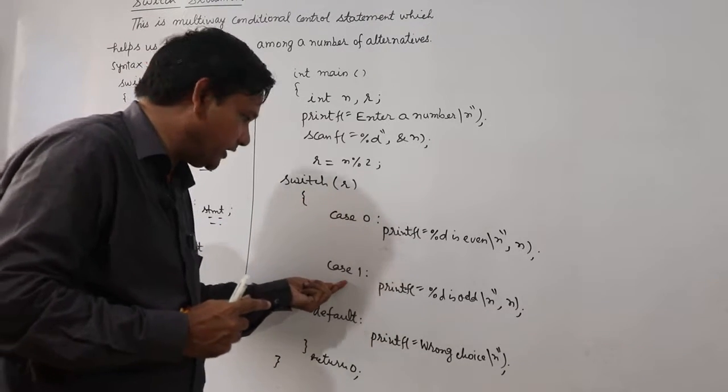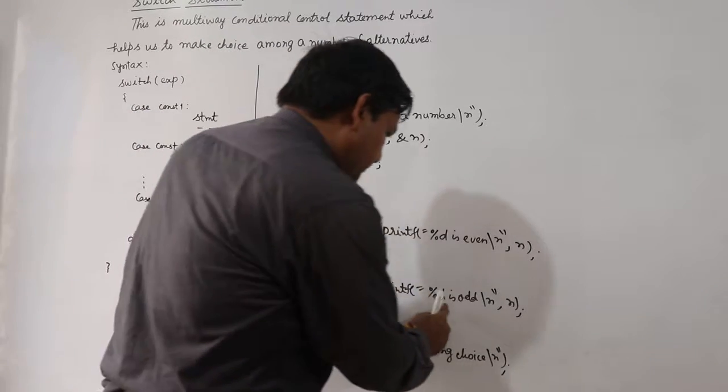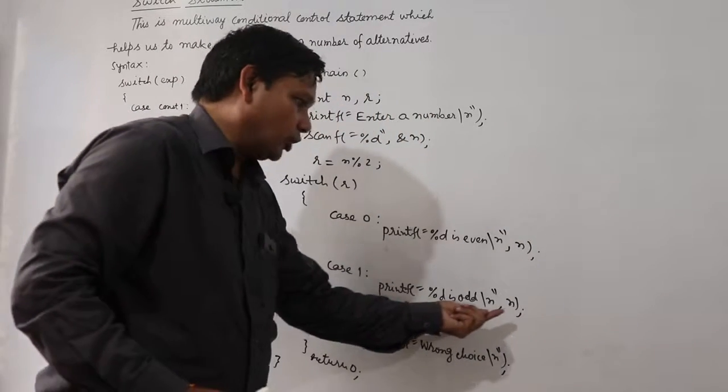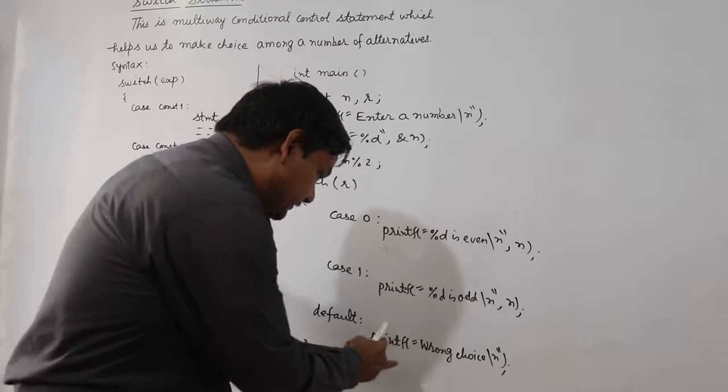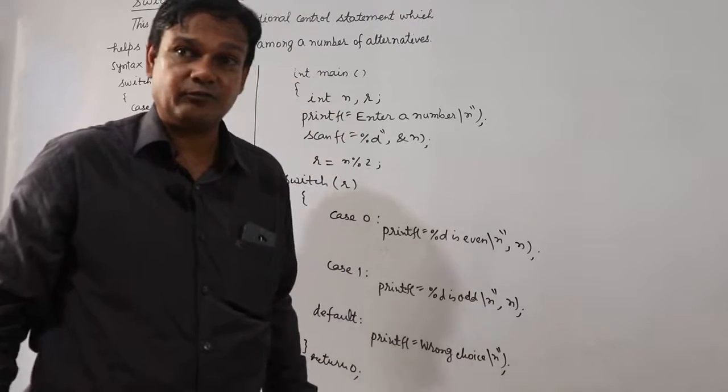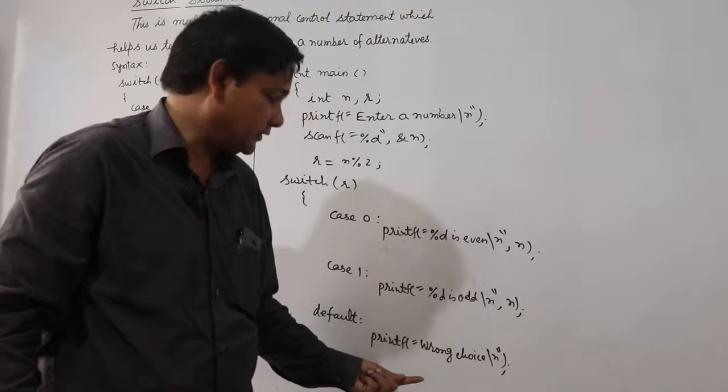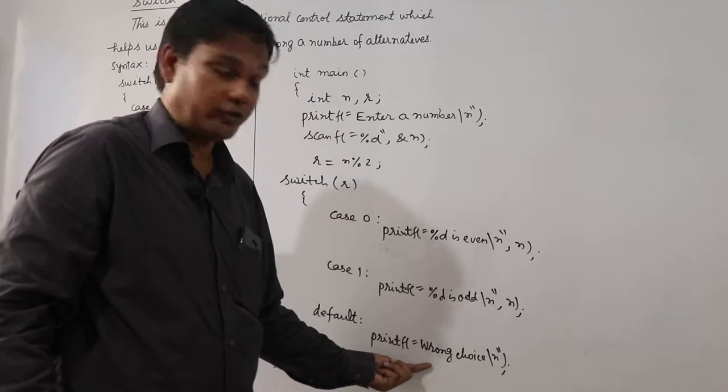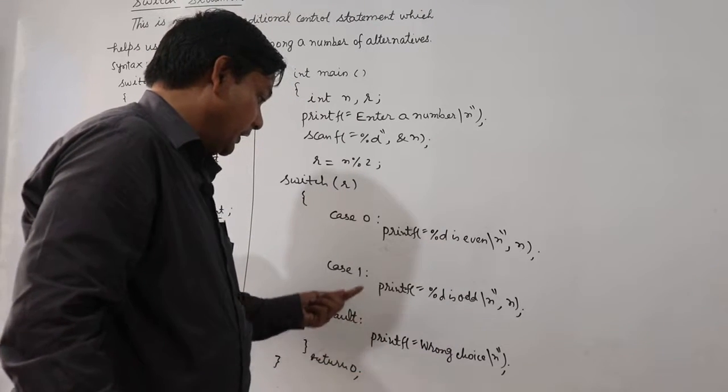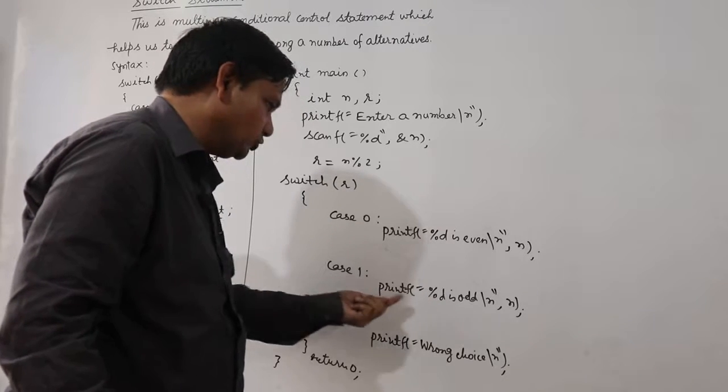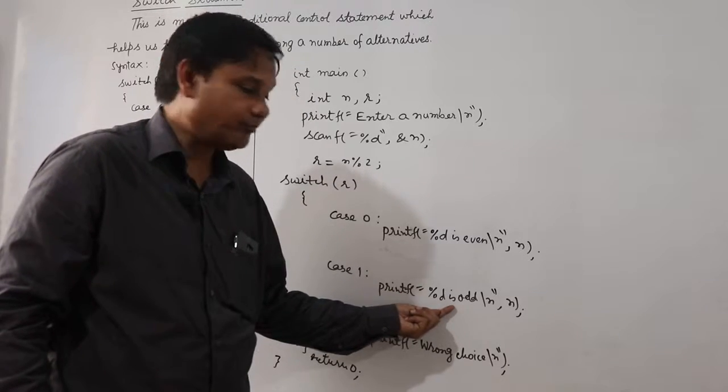Case 1 will be encountered here. In case 1, 11 is odd. Then, this statement will also be executed wrong choice. Wrong choice, this wrong choice and before this wrong choice, 11 is odd.